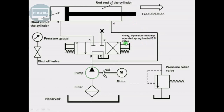It uses a three-position four-way direction control valve with its port 2 blocked, as shown. The lines to both ends of the cylinder are connected in parallel, as we can see here.